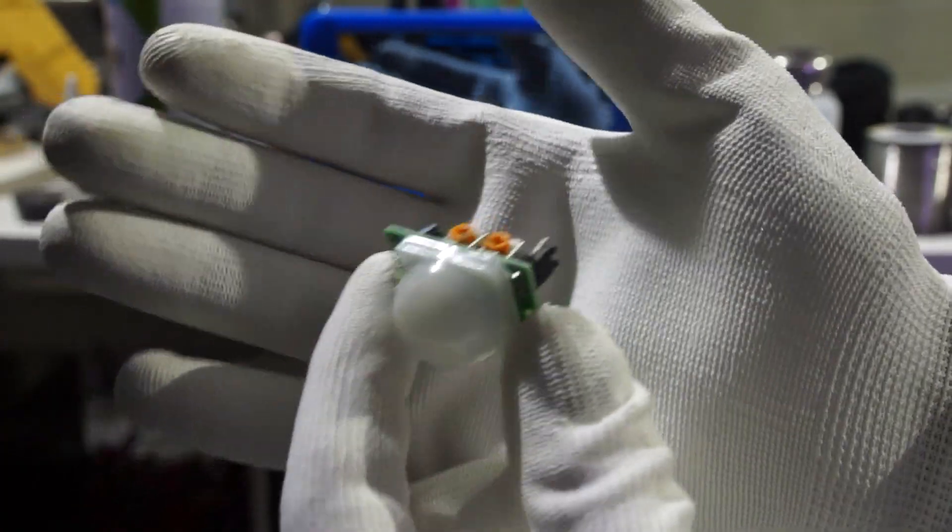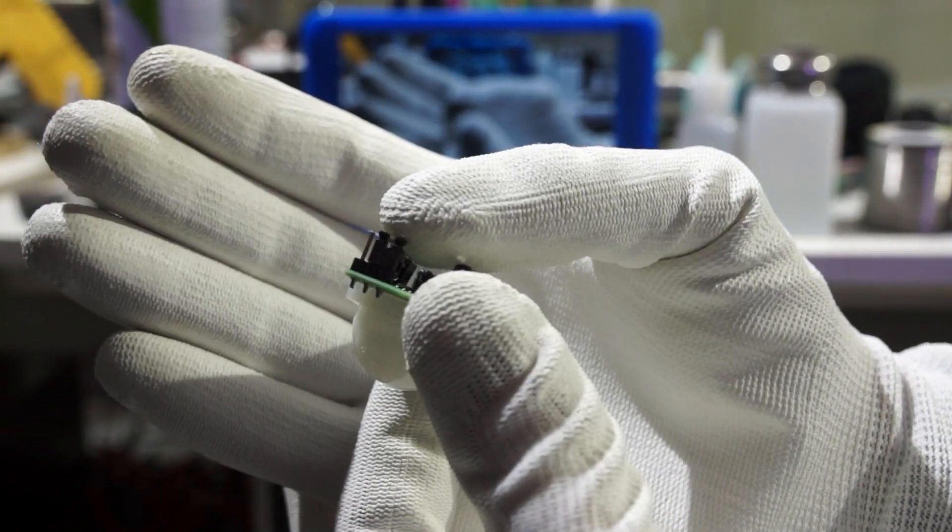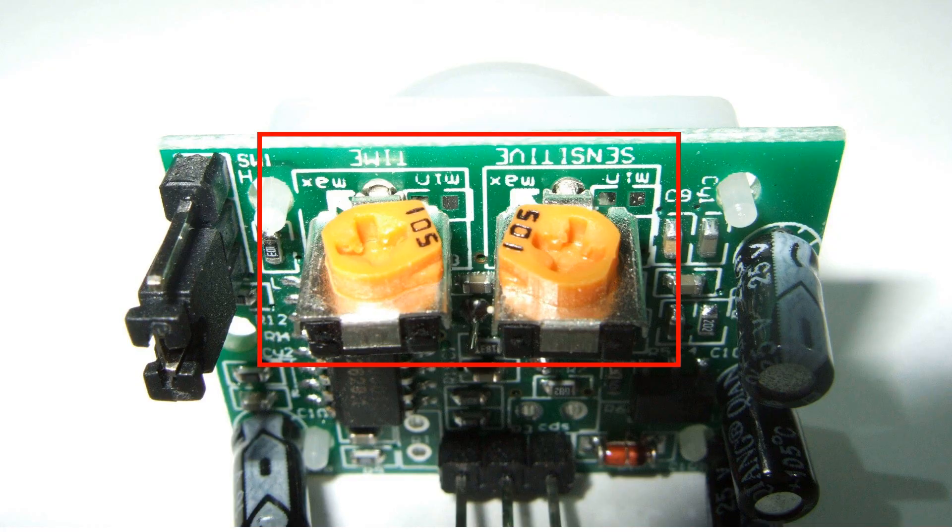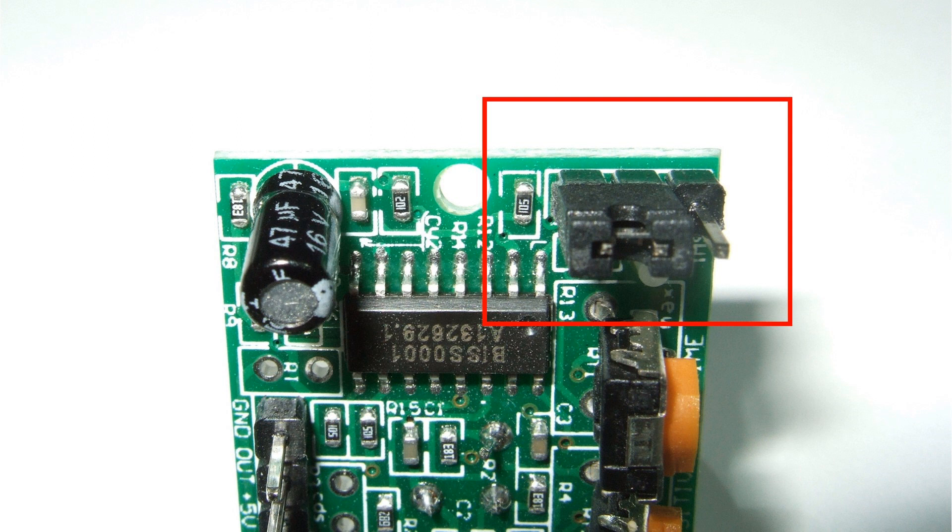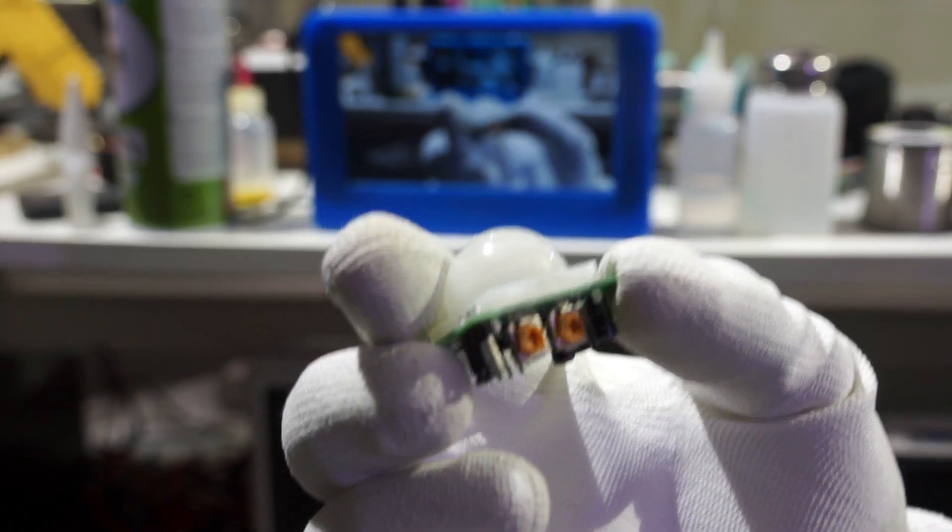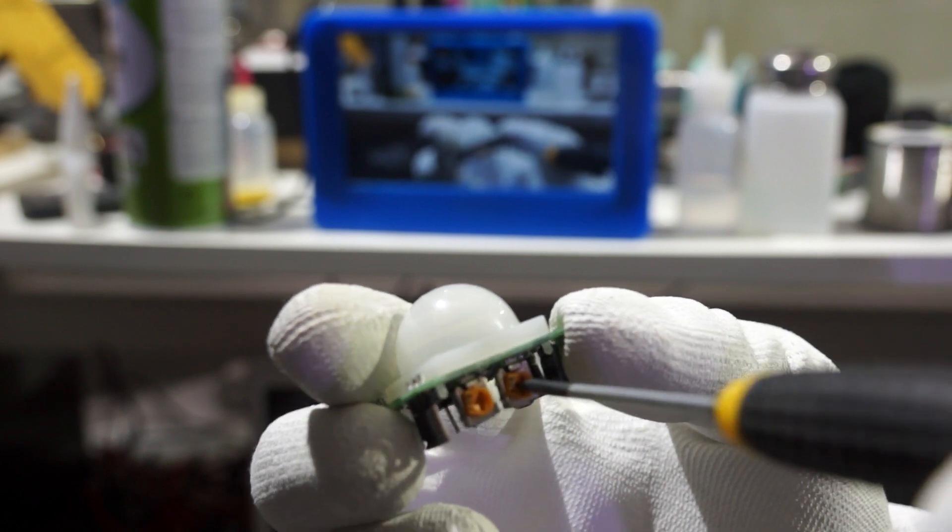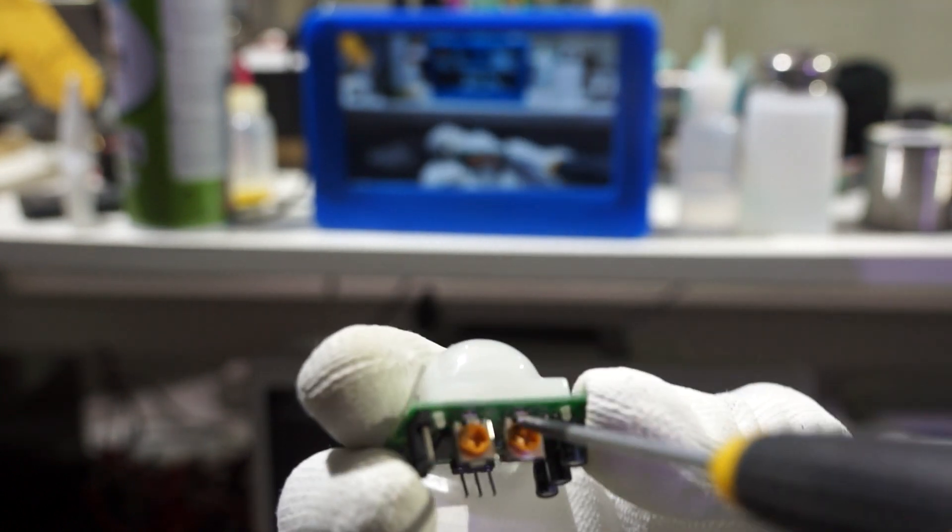The bigger HC-SR501 has two potentiometers and a jumper to influence its behavior. The left potentiometer is for delay and the right is for sensitivity. And with the jumper, you can influence its trigger behavior. Because I want to use these sensors with microcontrollers, I put all the logic in my sketch and I just want to get a signal as soon as a motion is detected.